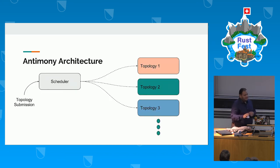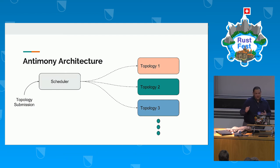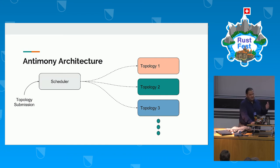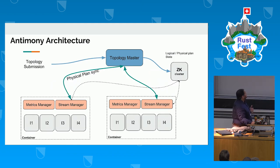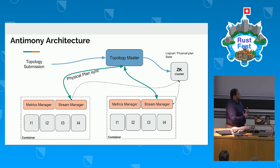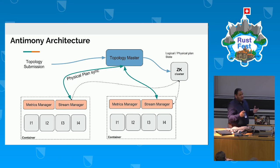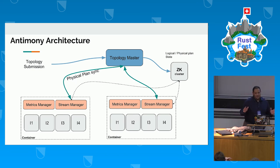Heron does not have a master node — it doesn't use Nimbus and doesn't have a master node responsible for scheduling. It uses existing schedulers like Apache Mesos, Marathon, or Aurora. You submit your topology to the scheduler, and each topology has its own topology master. The topology master is a component responsible for translating your logical topology plan into the physical plan and maintaining state. It does not handle heartbeats or the flow of data — there's a separate process called the stream manager for that. The unit of abstraction for execution is a container, not a JVM process, making it much easier to deploy at larger scale.